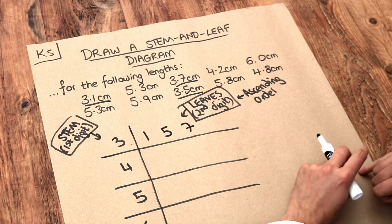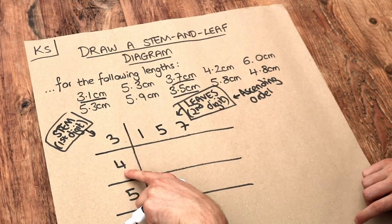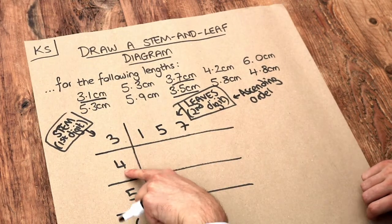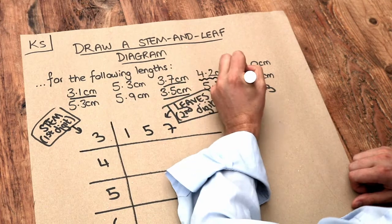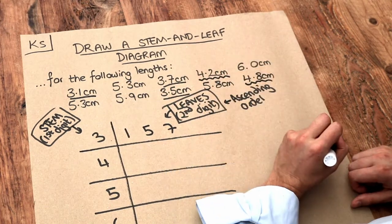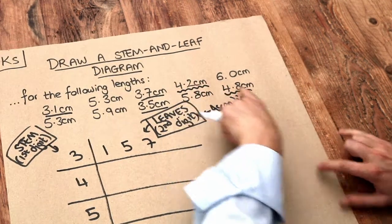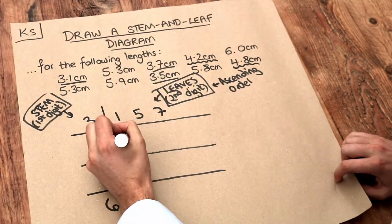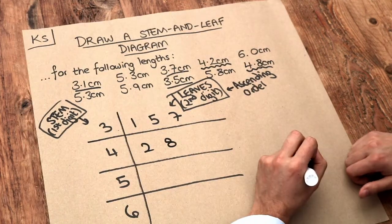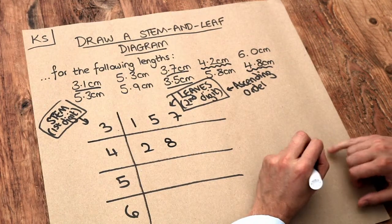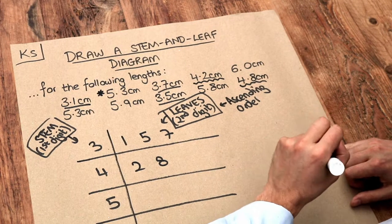That's our first row complete. Now what about the fours? We've got a four here and a four here — that's it. The second digits are two and eight, so I'm going to put those down.